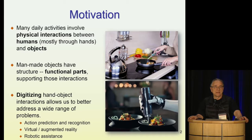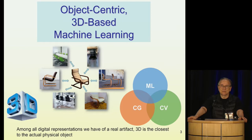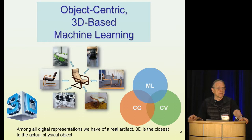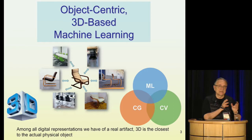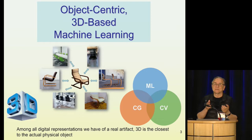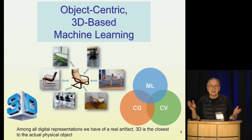In this talk, I'm going to take an object-centric point of view to machine learning. It will be 3D-based because I believe that among all the representations we have of objects, 3D is the one that is closest to the physical artifact. As compared to images, 3D is free of distractors like background, clutter, and occlusions. It also gives us a whole view of the object, not just one side of it.